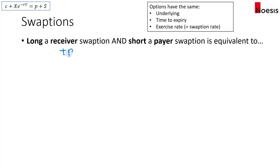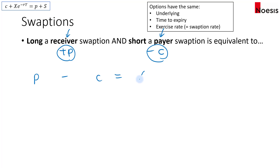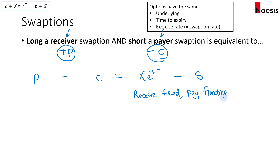For a long receiver swaption and a short payer swaption, based on put-call parity — a long put and a short call, with the put resembling the receiver and the call resembling the payer swaption — that would be equal to the risk-free bond minus the underlying. So in this case, this would be receive fixed, pay floating — a forward swap.